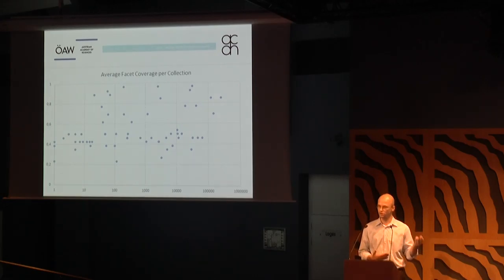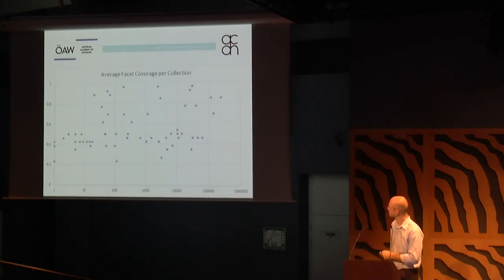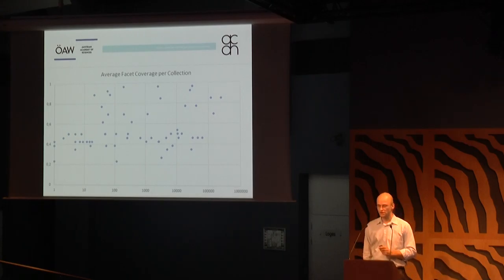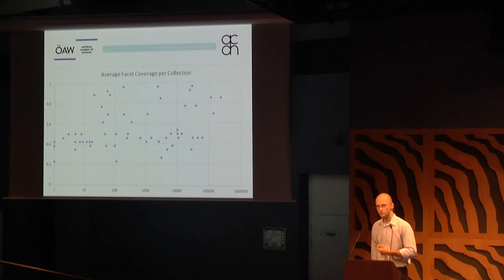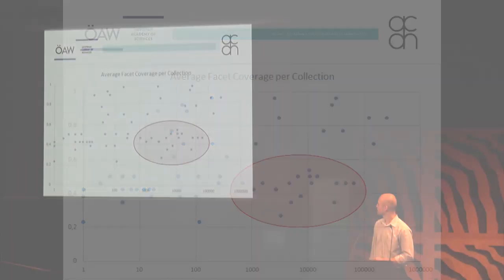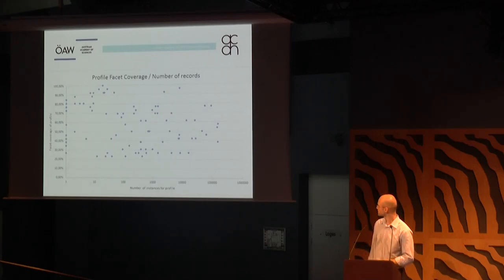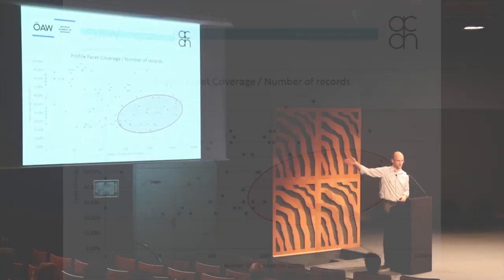Plotting just the facet coverage score — between 0 and 1 — against the size of the collection, you see big collections with good coverage, big collections with bad coverage, and small collections with both. If we are to concentrate on individual collections to fix, this is the way to start: big collections with bad coverage. Similarly for profiles, we should start from the bottom up and right to left.